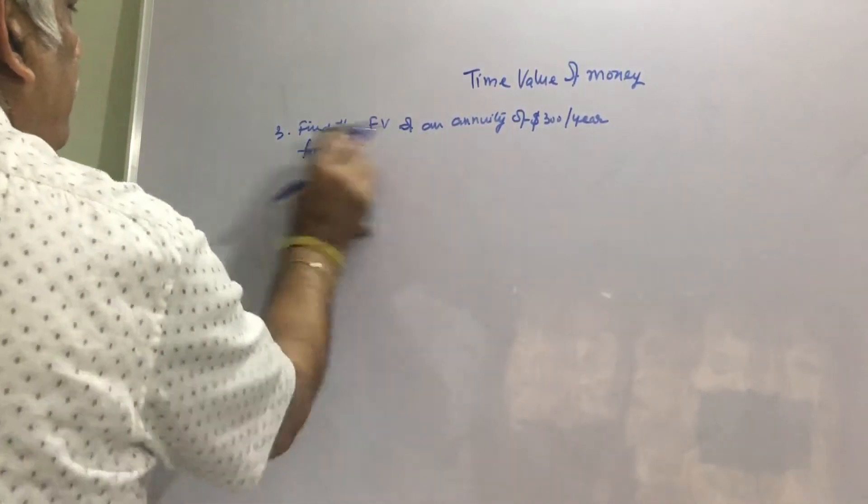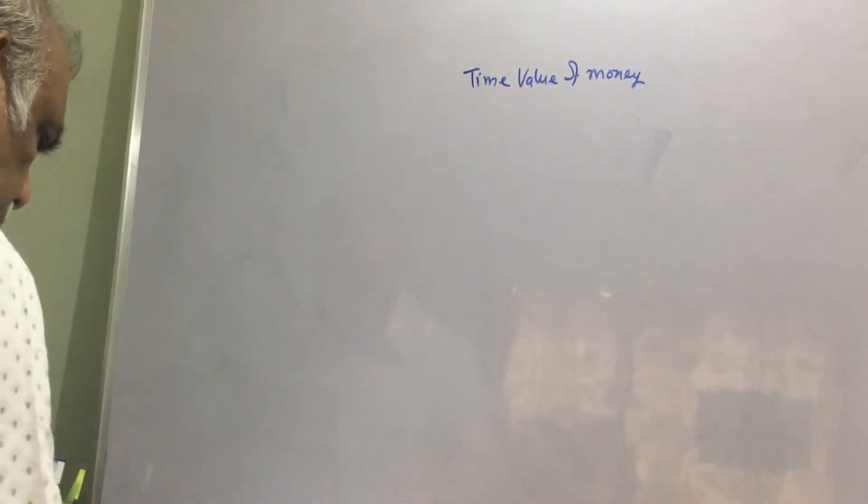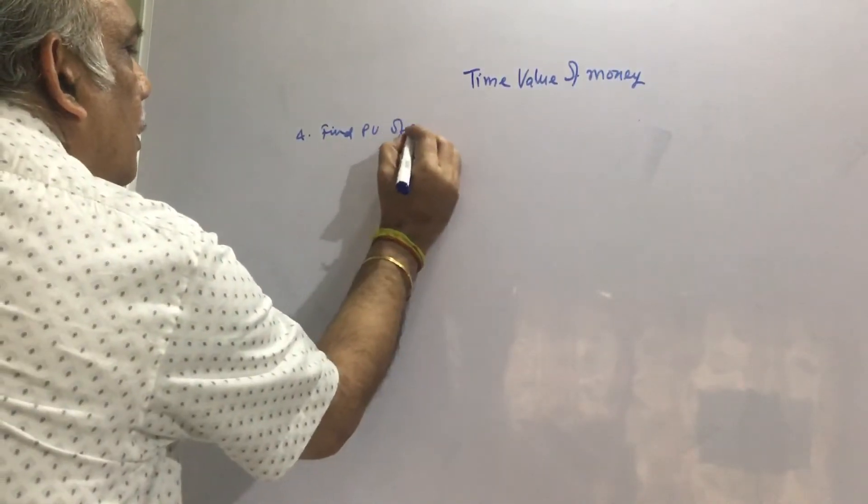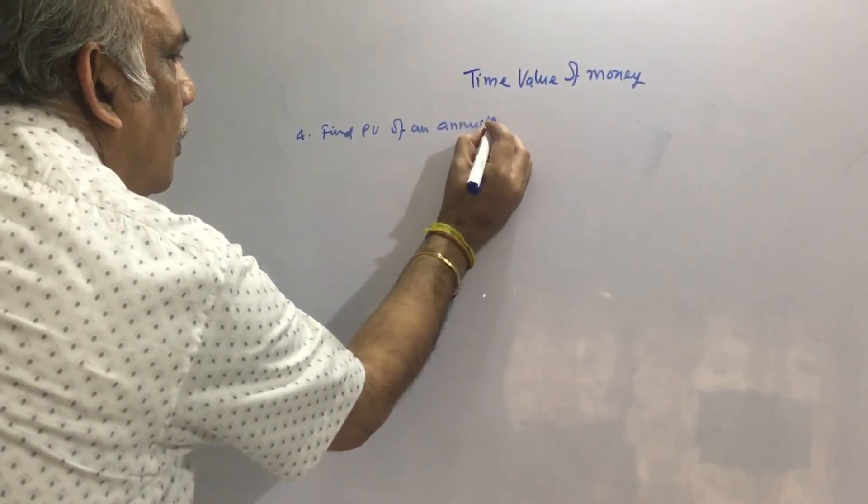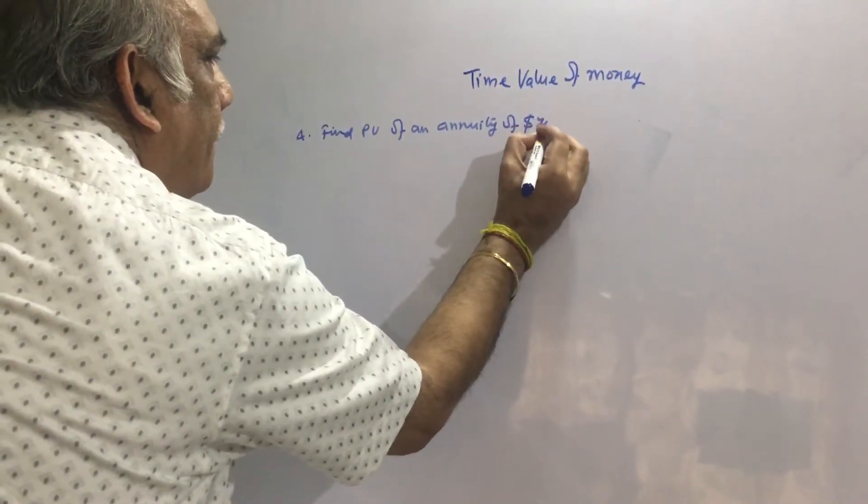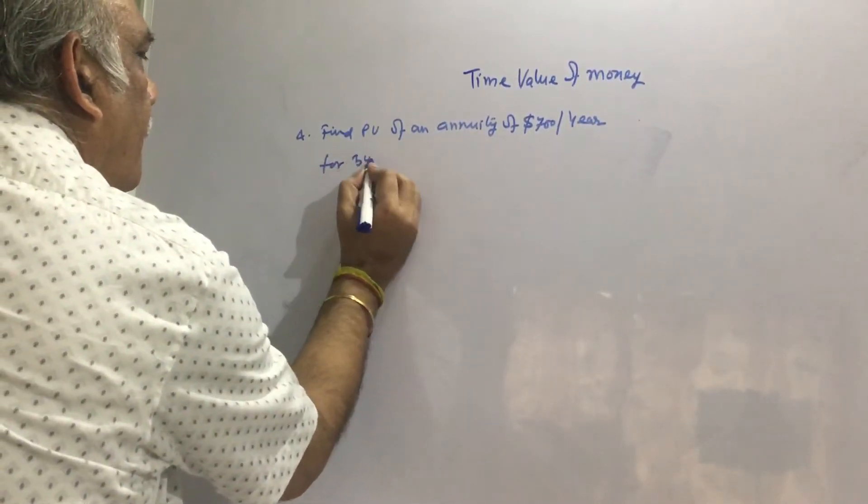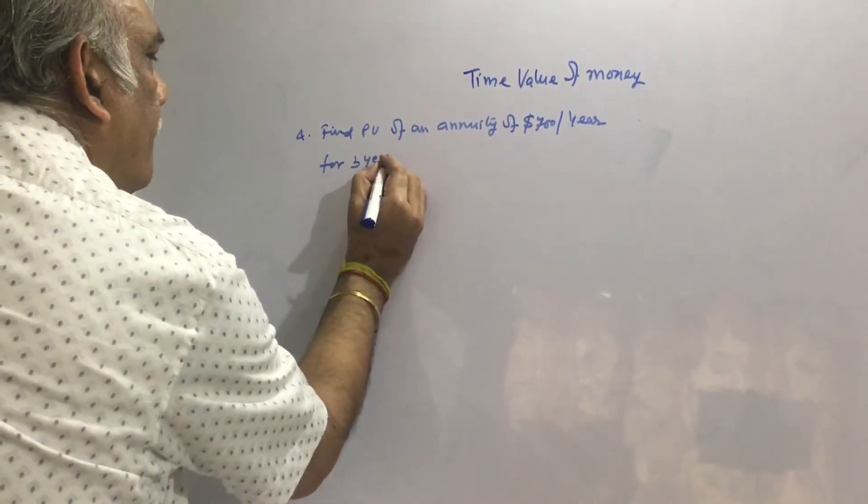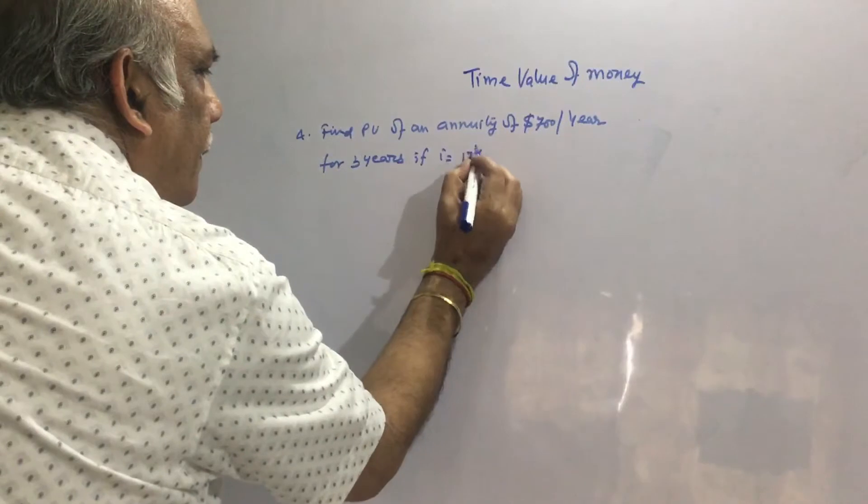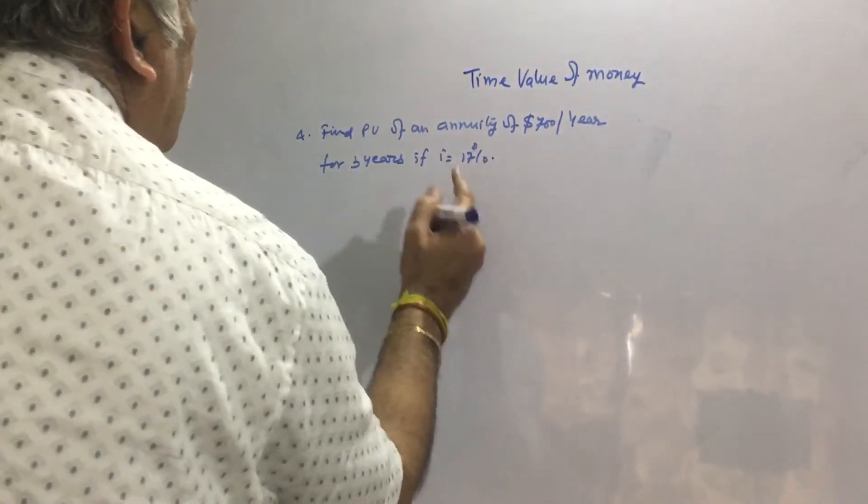So this is how we can calculate the future value of an annuity. Let us see the fourth problem: Find present value of an annuity of $700 per year for 3 years.